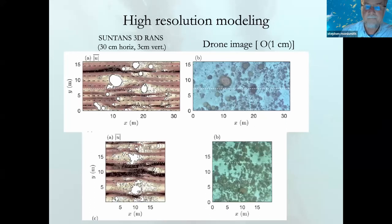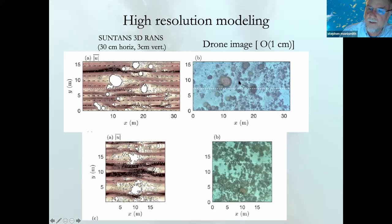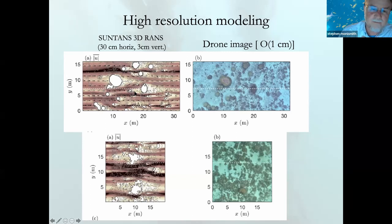One goal of this project was to take drone images, acquired by Ved Cheriath — then a PhD student at Stanford, now at the University of Miami — and produce topography at a resolution of about one centimeter. We initially talked about one millimeter resolution, but that would have involved something like 10 petabytes of data, which is a couple hundred thousand dollars of disk storage. So we went with lower resolution. We then put this topography into Oliver Fringer's 3D Reynolds-averaged Navier-Stokes code SUNTANS, using a generalized length-scale turbulence closure from Burchard et al.